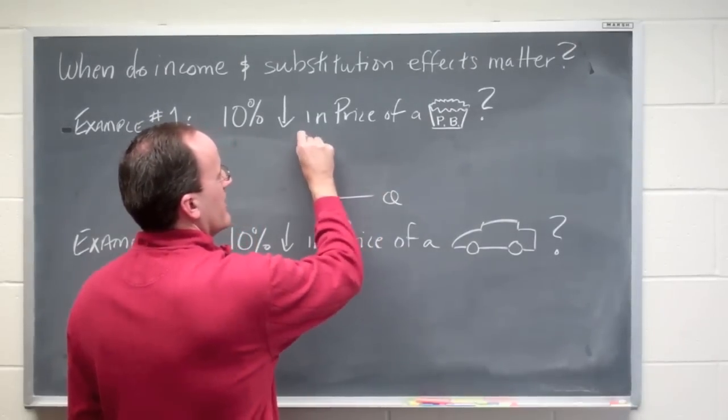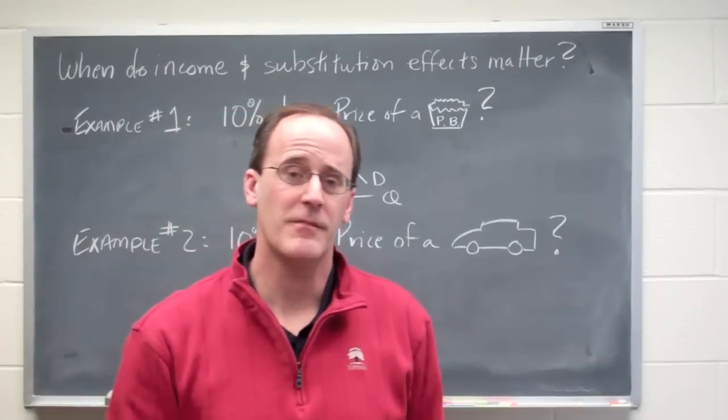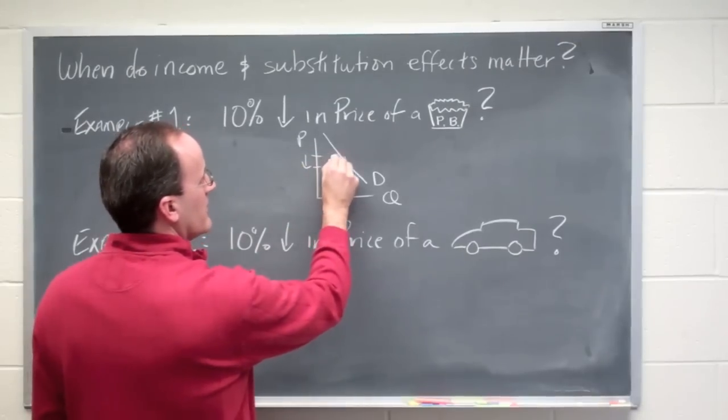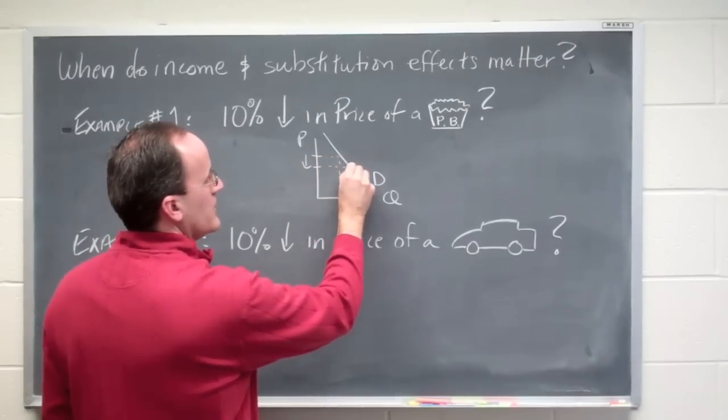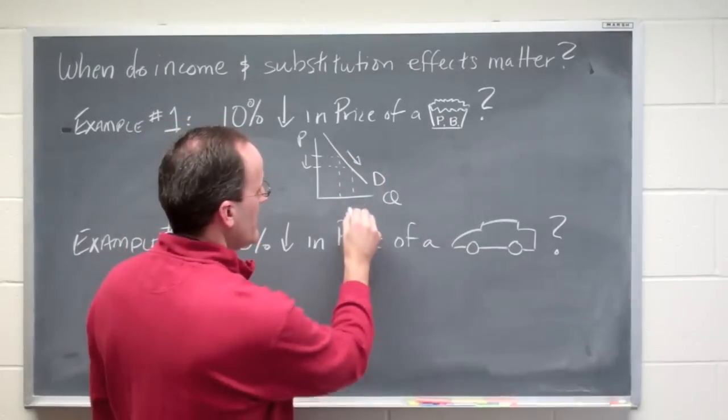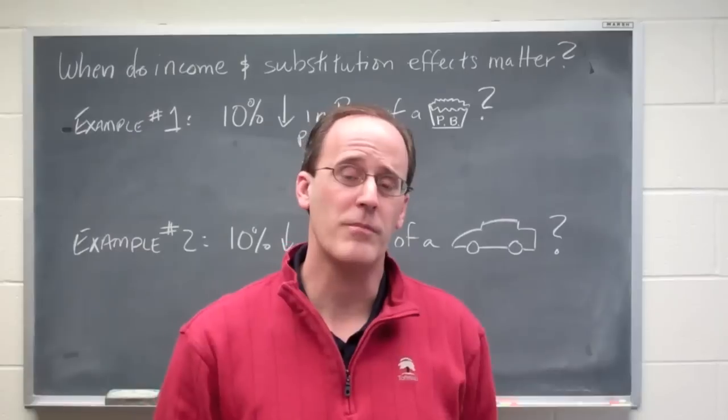We can see this if we were to look at the demand curve for peanut butter cups. The price drop, even though it's small, induces some people to slide along the demand curve and the quantity demanded increases. So people will buy more peanut butter cups.